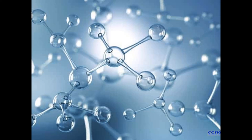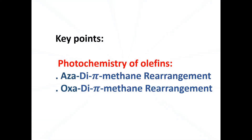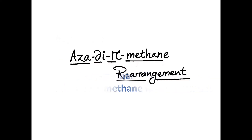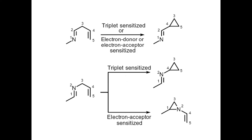Let's start a new lecture of photochemistry. In this lecture we are going to see some more examples, some more rearrangements — that is aza-di-pi-methane rearrangement and oxo-di-pi-methane rearrangement. There is no drastic change in these rearrangements. Aza means there is a nitrogen atom present in the 1,4-diene system, and in case of oxo-di-pi-methane rearrangement there is oxygen present in the 1,4-diene system.